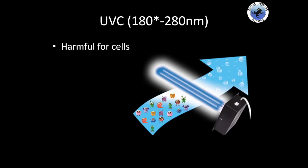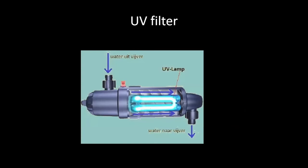Another area of UV radiation is UVC, which is more harmful for cells. It is mainly used to kill microorganisms like bacteria, fungi, or viruses. It's used in water filters where UV light kills everything, so the water comes into the system without any organisms that could be dangerous for your frogs.